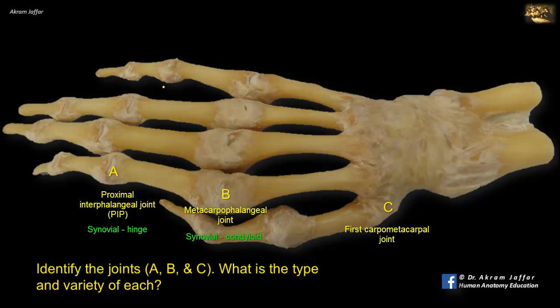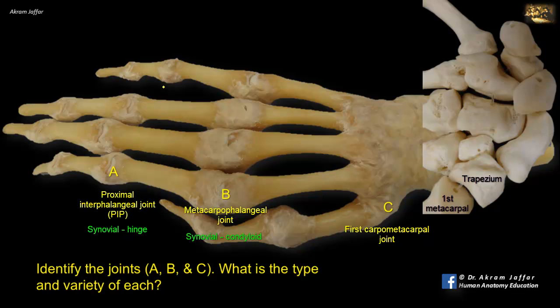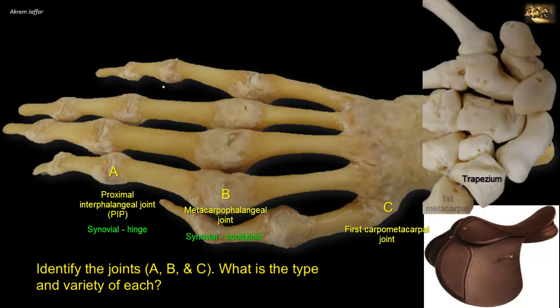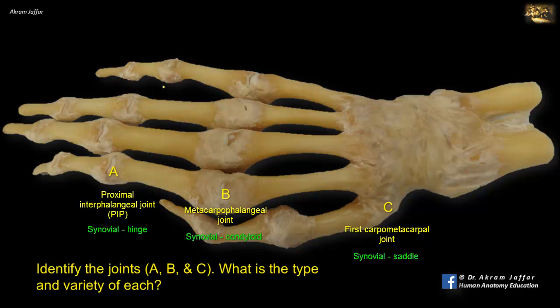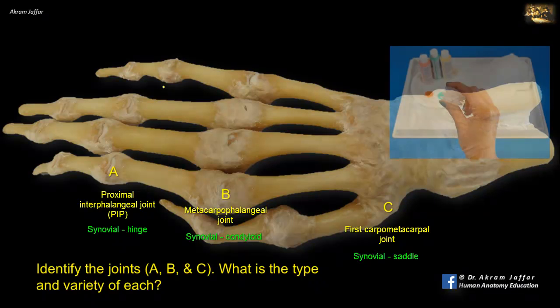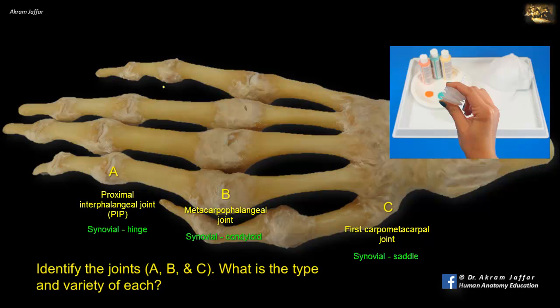C is the carpometacarpal joint of the thumb. It is located between the trapezium, a carpal bone, and the base of the first metacarpal bone. It is a typical example of a saddle variety of synovial joint, which allows more freedom of movement for the thumb. Comparing this joint to the corresponding joints of the other fingers, the other carpometacarpal joints are of the plain variety of synovial joints. In the saddle variety, the articular surfaces are concavo-convex and allow more freedom of flexion-extension, abduction-adduction, as well as opposition of the thumb, which is required for the pincer-like action of the hand.